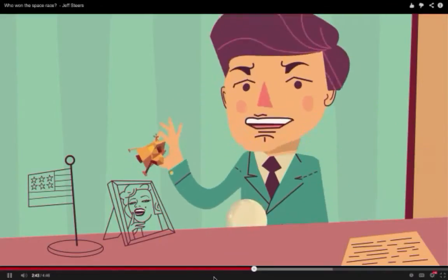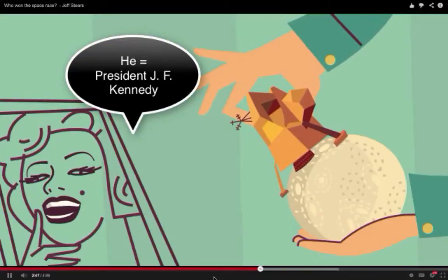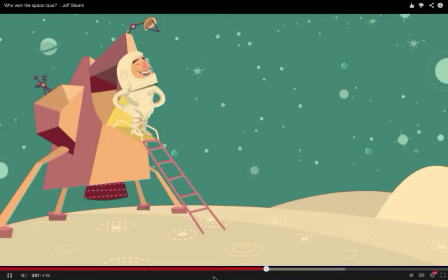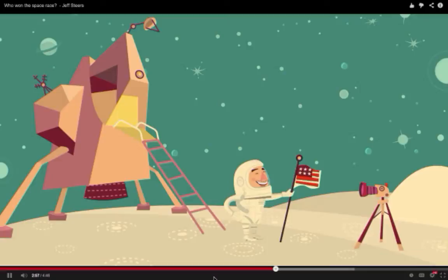And in May 1961, a month after Gagarin's flight, he announced the goal of putting a man on the moon by the end of the 1960s. They succeeded in this through the Apollo program, with Neil Armstrong taking his famous step on July 20, 1969.